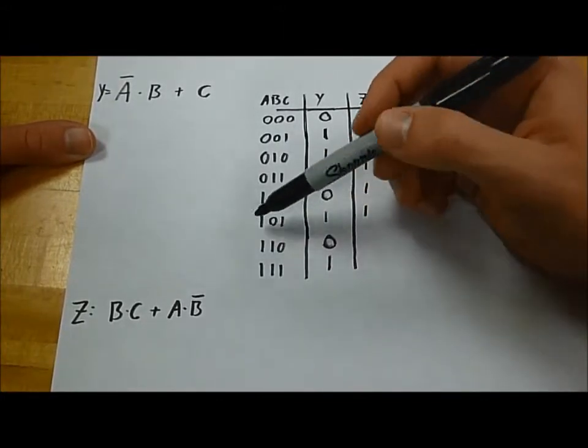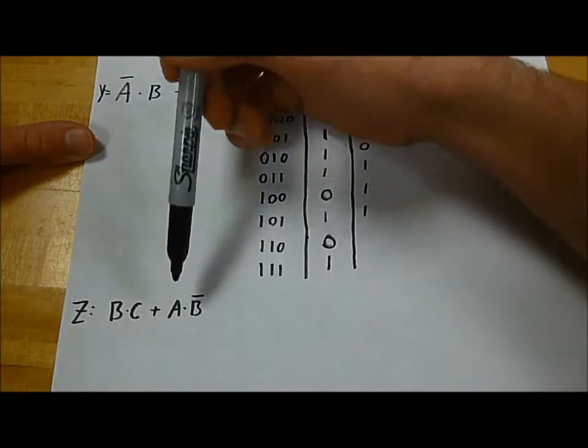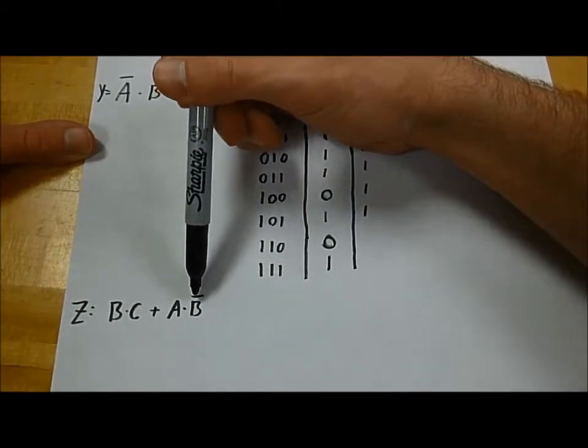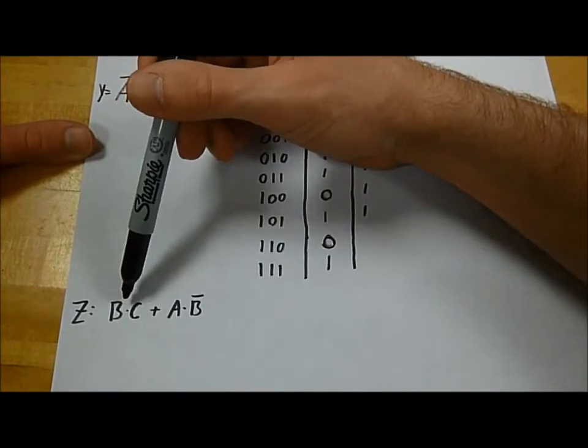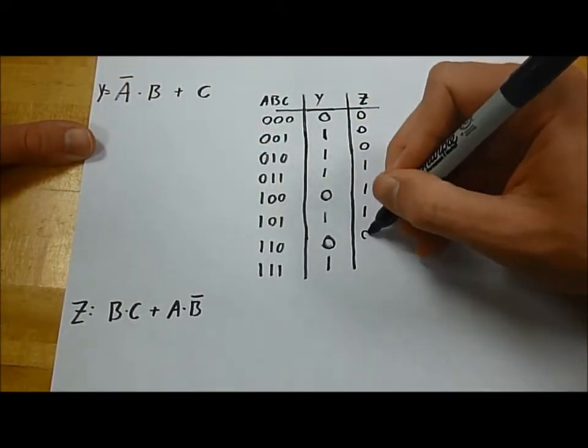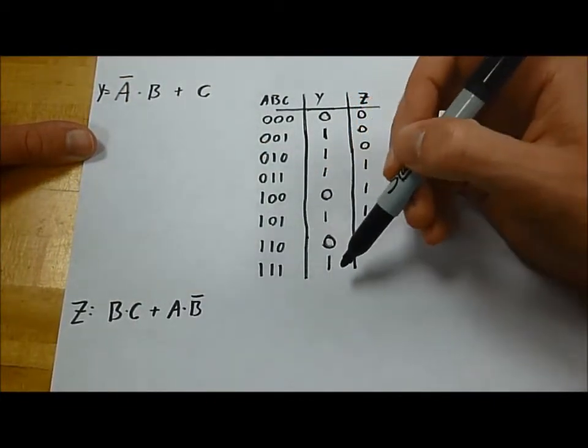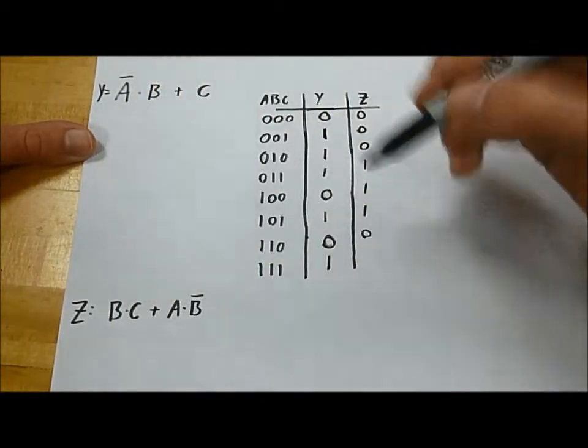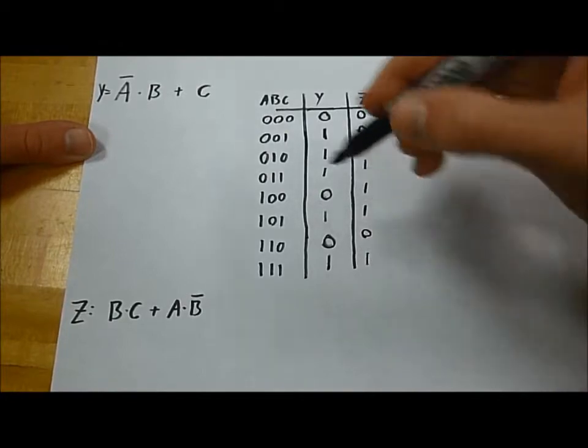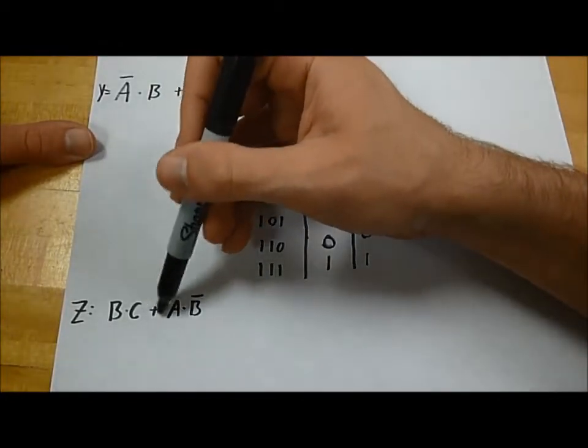Here, we'll say 1, 1, 0, which is 1 and 0, so 0, and this is 1 and 0, so 0. And for 1, 1, 1, we'll have B and C, which is 1, 1, which is 1. We can ignore A and B because of this OR.